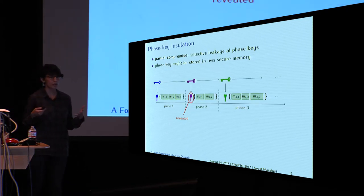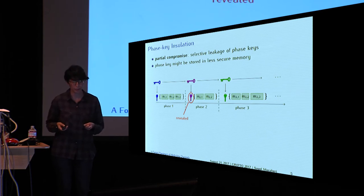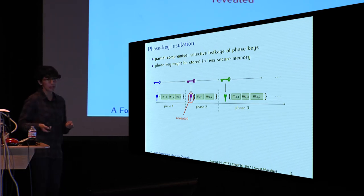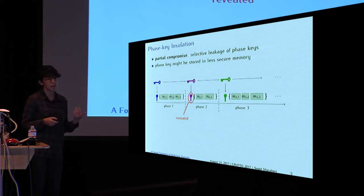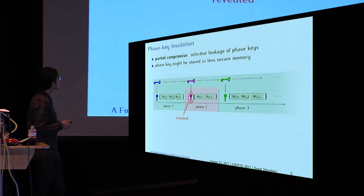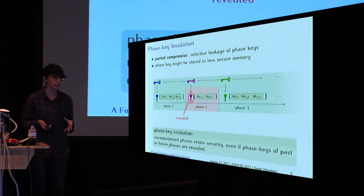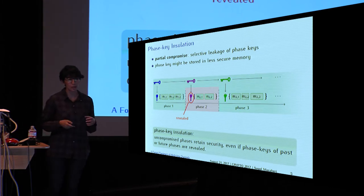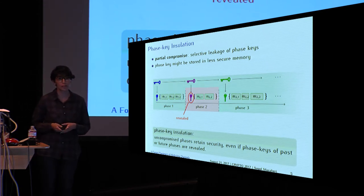The other security notion is called phase key insulation, and it is concerned with the selective leakage of phase keys. You can imagine that the adversary breaking into the computer cannot exfiltrate the master secret key because it is stored in more secure memory. However, the adversary is able to reveal the phase key. We want that the corruption of the phase key in phase 2 only affects that phase and not the other ones. More generally, phase key insulation means that uncompromised phases should retain their security even if past or future phases are compromised.